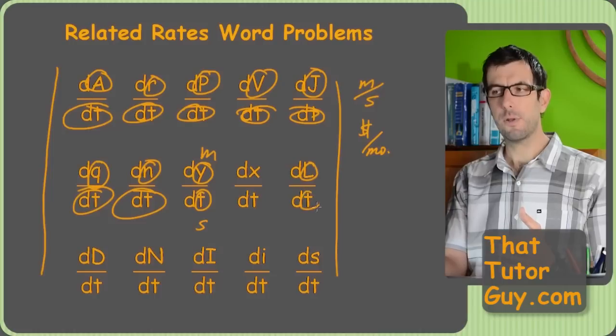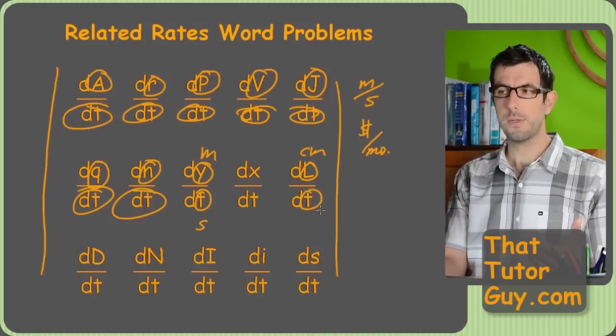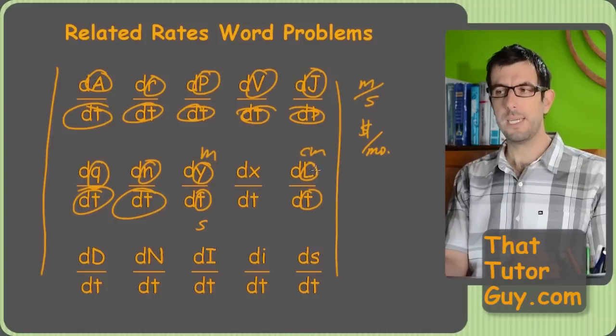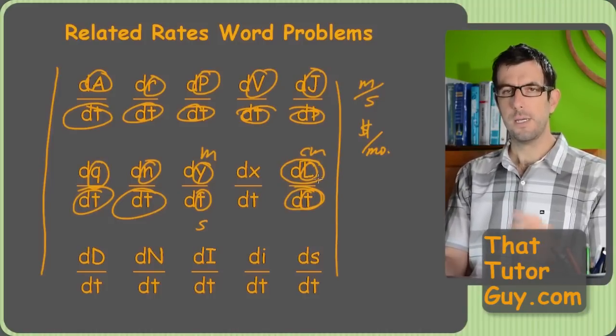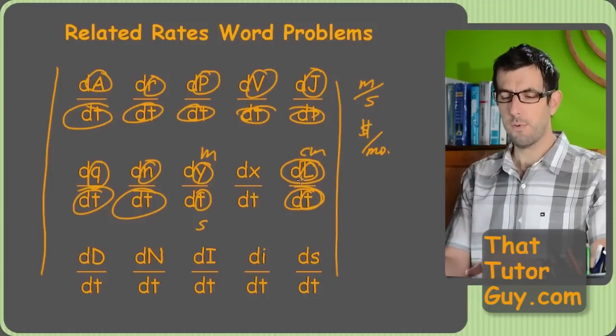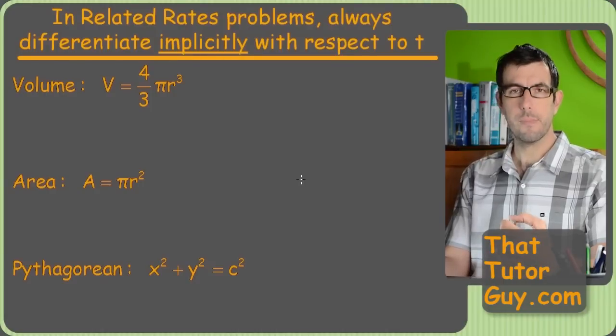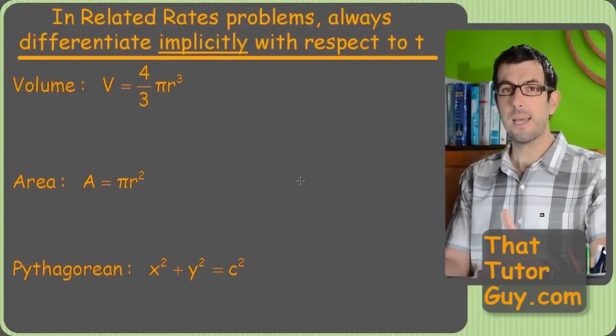dL/dt could be the rate of change of the length of something. It could be in centimeters, if the word problem was in centimeters. It could be meters, whatever. But dL/dt is the rate of change of L with respect to t. So hopefully this didn't blow you away too much. But I just want to drill that in. So whenever we take the derivative of an expression, now we're going to be doing it in terms of t, not x.